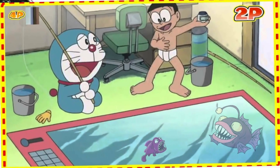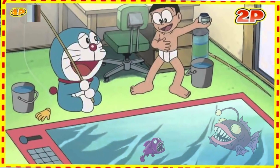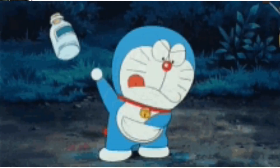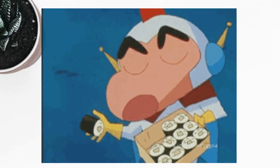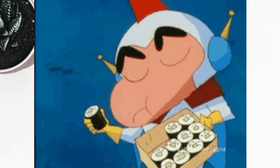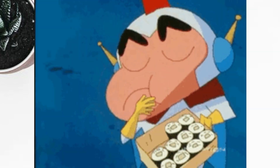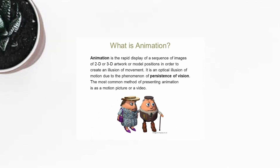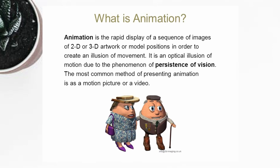Cartoons on television is one example of animation. Whereas video takes continuous motion and breaks it up into discrete frames. Animation starts with independent pictures and puts them together to form the illusion of continuous motion. It is the exact meaning of animation. The examples are given on screen, just go through it.